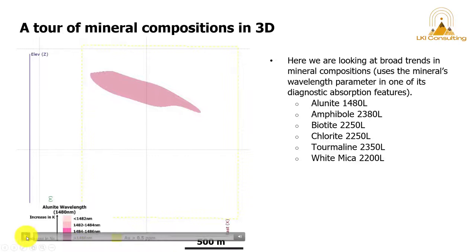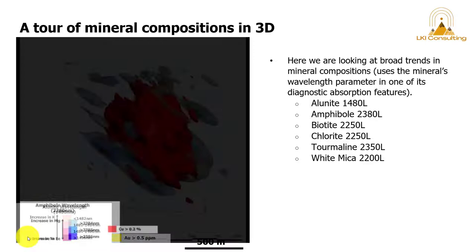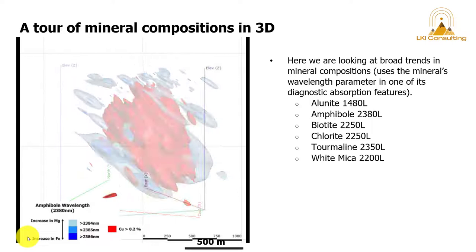So we have allianite, the 1480 wavelength feature. We're going to have amphiboles coming up. There's also the grade shell that I put in for reference. This is amphibole at the 2380 nanometer feature.